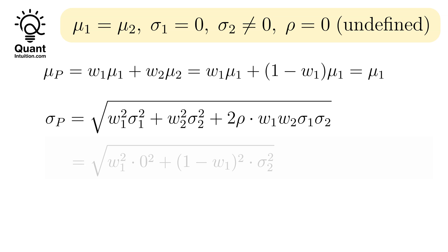To find sigmaP, we now apply our assumption to the formula, noting that for sigma1 equaling 0, and with uncorrelated assets, the covariance term disappears. This simplifies to the square root of the squared product of 1 minus W2 and sigma2. After simplifying, it's clear that while mu is unaffected by W1, sigma linearly depends on W1.